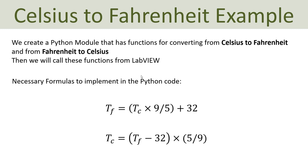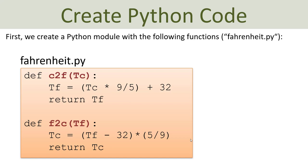In this tutorial I will provide the following example: I will create two functions in Python. The first function should convert from Celsius to Fahrenheit, and the second function should convert from Fahrenheit to Celsius. I will implement these two functions in Python and then integrate them in my LabVIEW application. The Python module will be named Fahrenheit.py, and the two functions will use the standard conversion formulas.